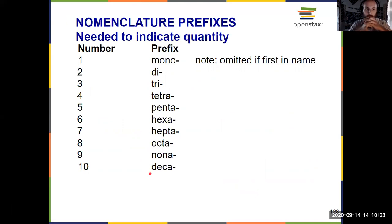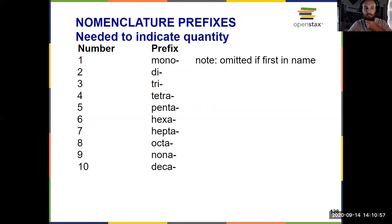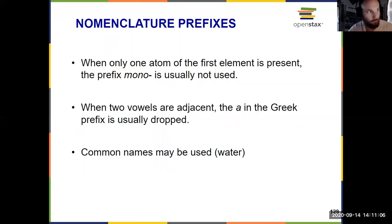The only thing to note is that if the very first element would get the prefix mono, it gets omitted. So for CO2, you don't say monocarbon dioxide — if the more metallic element has just one atom, you skip mono. But you'll always have a prefix for whatever comes second. However, if you had P2O5 with two phosphoruses to start, you do include a prefix at the beginning: diphosphorus pentoxide.